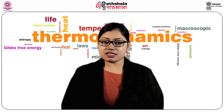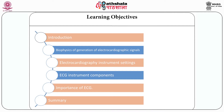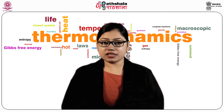In this module, we will start with the objectives. It includes the introduction, biophysics of generation of electrocardiographic signals, normal cardiac cellular electrophysiology, source and sink concept, generation of cardiac electric fields, concept of limb leads, augmented limb leads, precordial leads, Wilson central terminal, concept of volume conductor, electrocardiographic instrument setting, recording setting, the recording system, electrocardiography electrode connection, importance of ECG, and finally the summary of the module.